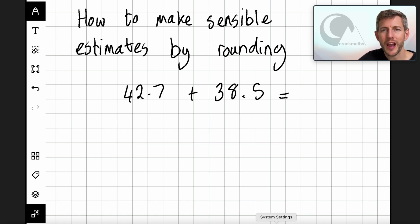So we have to look at the numbers that we've been given and round them to the first number. I'm going to look at this 42.7 and say 42.7 is roughly 40. Now I'm going to look at this 38.5 and say 38.5 is roughly 40 as well.